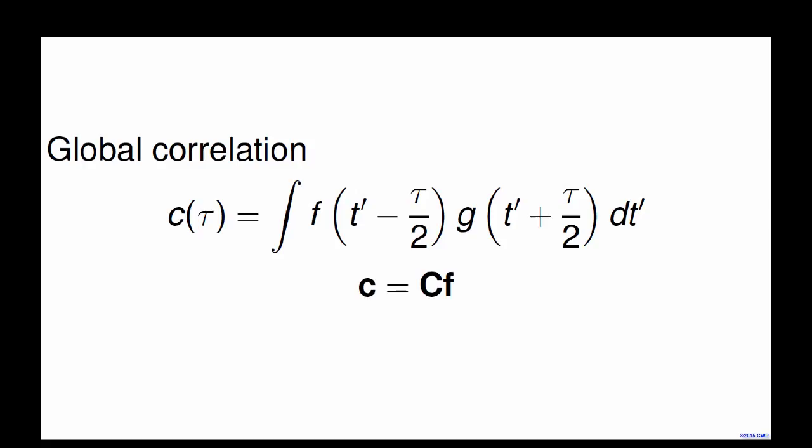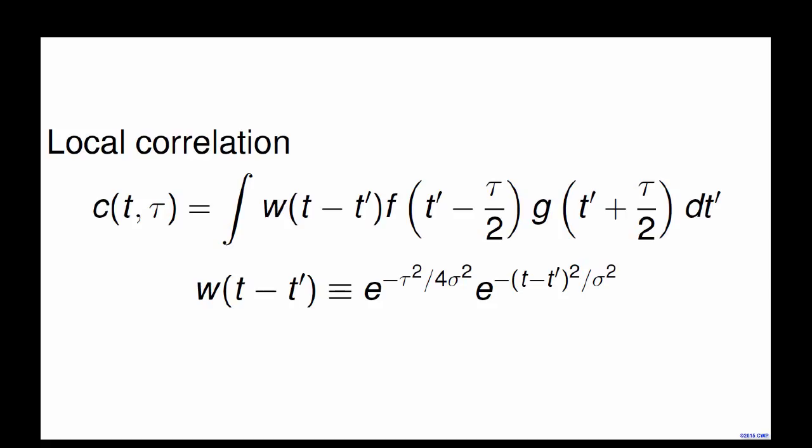This correlation formula is a linear operator, and we will use capital C as the operator throughout this presentation. Instead, we could use the local correlation proposed by Dave a few years ago, where we not only compute the product between two shifted signals, but instead of stacking over all possible times, we do it with a Gaussian window function that has exponential damping proportional to the time lag. This convolution with the Gaussian window is recursive and quite efficient, almost at the same cost as a global correlation, and contains more information about local behavior along the correlation between signals A and B.